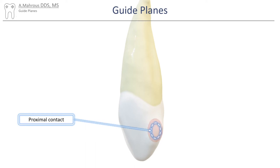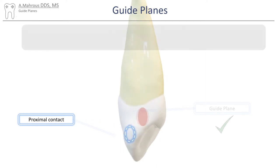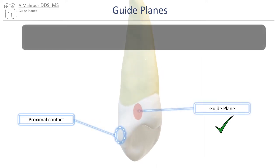In anterior teeth, guide planes cannot be made in contact areas because any alteration of the contact area will result in an unesthetic appearance. Because of this, guide planes are made lingual to the proximal contact area on anterior teeth.